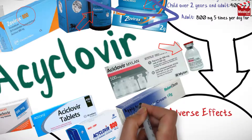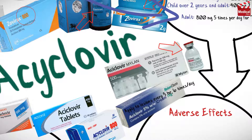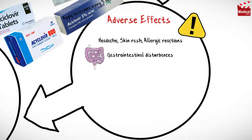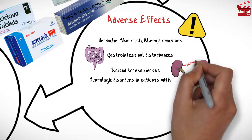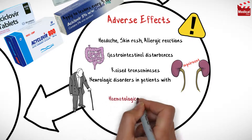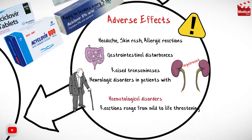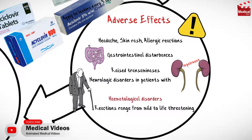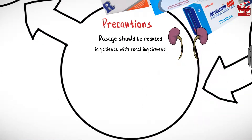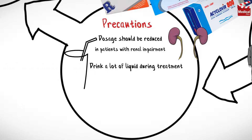This drug may cause headache, skin rash, allergic reactions, gastrointestinal disturbances, raised transaminases, and neurologic disorders in patients with renal impairment and elderly patients. Rarely, hematological disorders — reactions range from mild to life-threatening. Reduce dosage in patients with renal impairment and drink plenty of liquid during treatment.